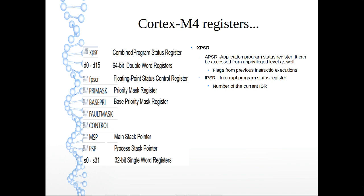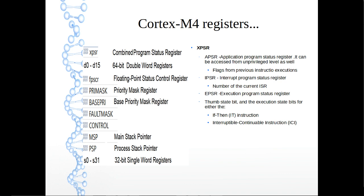IPSR — the interrupt program status register — contains just the interrupt vector number of the current interrupt service routine. EPSR — the execution program status register — contains the Thumb state bit, indicating whether the current state is using Thumb instruction encoding or ARM encoding, and the execution state bits for either the if-then instruction or the interruptable-continuable instruction, known as ICI.